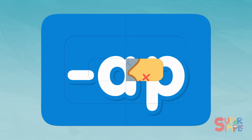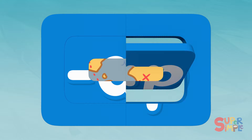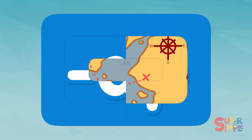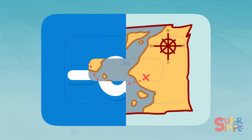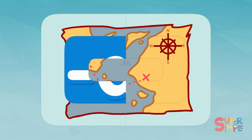I see an X. Some red dots. That looks like a compass. I think I know. Do you? X marks the spot.